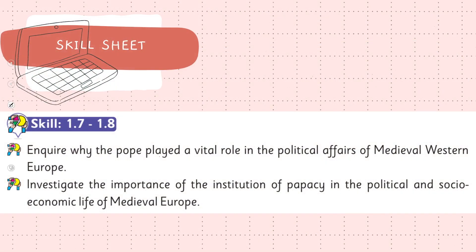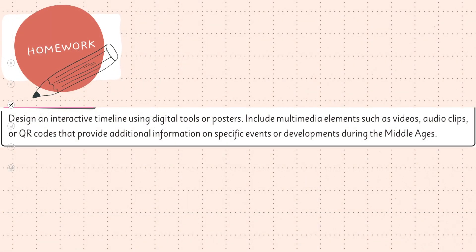For further practice, you can scan the QR code and access skill sheets 1.7 and 1.8. A teacher can complete these in class or assign them as homework. For your homework project, you can design an interactive timeline using digital tools or posters, including multimedia elements such as video, audio clips, and QR codes that provide additional information on specific events and developments during the medieval ages.